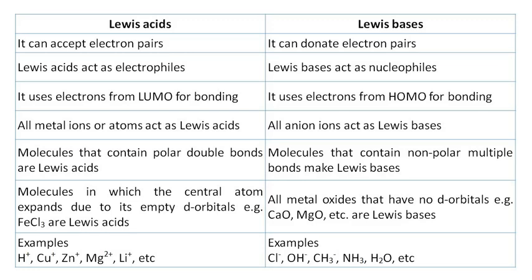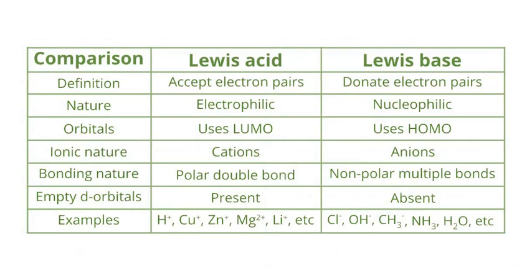Molecules in which the central atom expands due to its empty d-orbitals, for example ferric chloride, are Lewis acids. But all metal oxides that have no d-orbitals, for examples calcium oxide, magnesium oxide, etc., are Lewis bases.